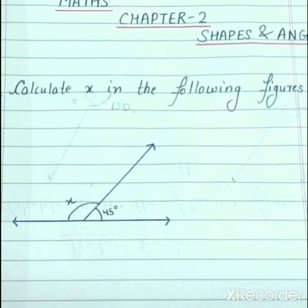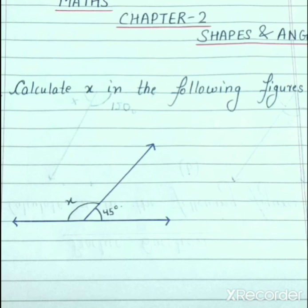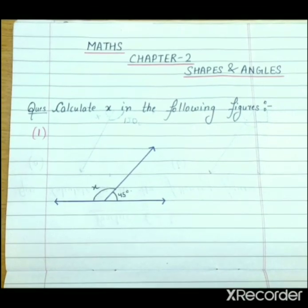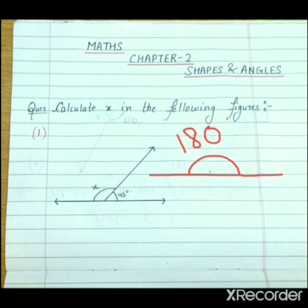Here you can see the first figure. In this figure, this is angle x and this is angle 45 degree. Is there any other angle in the figure? Yes, there is one more angle in the figure — you can see this one. As we have already studied about this angle in our previous classes, this is a straight angle. What is the measure of a straight angle? The measure of a straight angle is equals to 180 degree.